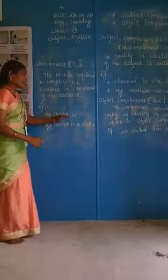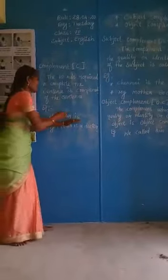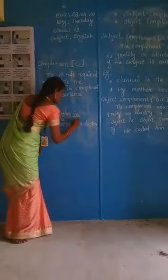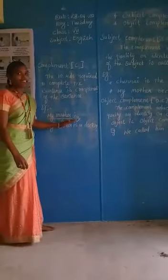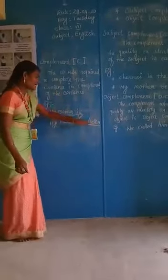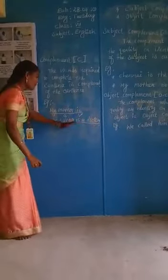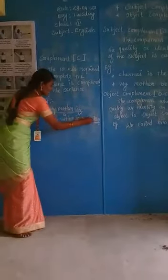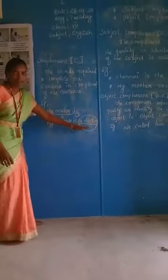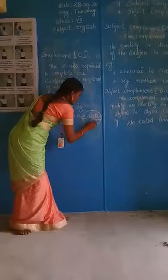For example, 'My mother is' — this sentence is not complete. This is the sentence pattern of S-V. When we add 'a doctor', it becomes complete: 'My mother is a doctor.' Here, 'a doctor' is going to complete the sentence, so 'a doctor' is the complement of the sentence. We put a C.